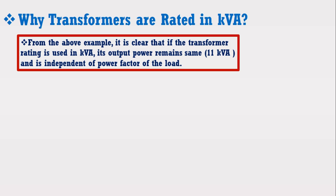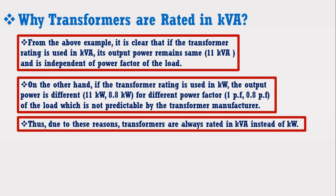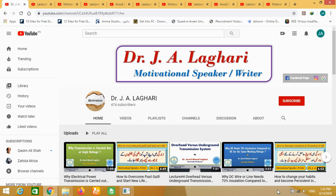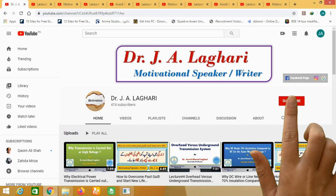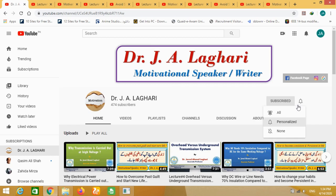From the above example, it is clear that if the transformer rating is expressed in kVA, its apparent power remains the same and is independent of the power factor of the load. On the other hand, if the transformer rating is expressed in kW, the output power is different for different power factors of the load, which is not predictable by the transformer manufacturer. Thus, due to these reasons, transformers are always rated in kVA instead of kW. I hope you are now clear about why transformers are always rated in kVA. I upload many videos based on various topics of power system and motivation on a regular basis, so don't forget to subscribe to my channel and share my videos with your friends and classmates. Thank you very much.